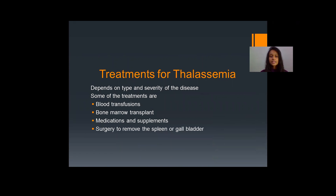The treatments for thalassemia depend on the type and severity of the disease. Some treatments include blood transfusions, bone marrow transplant, medications and supplements, and sometimes surgery to remove the spleen or gallbladder. The spleen is the organ involved in the destruction of damaged or old red blood cells. In thalassemia, the red blood cells produced are abnormal and are excessively destroyed in the spleen. To prevent this excessive destruction, the spleen may be removed through surgery.